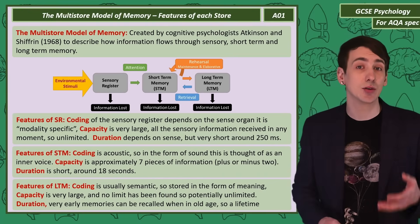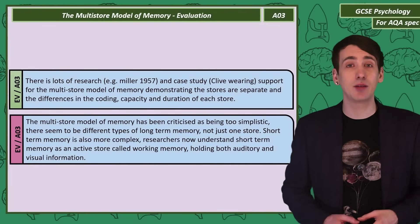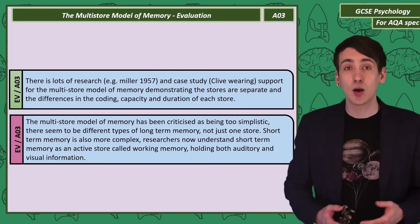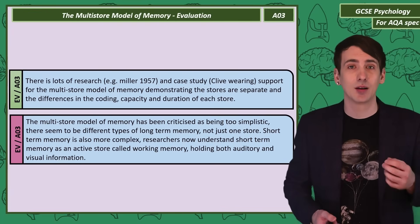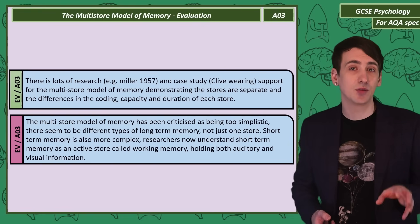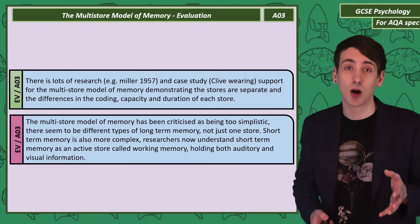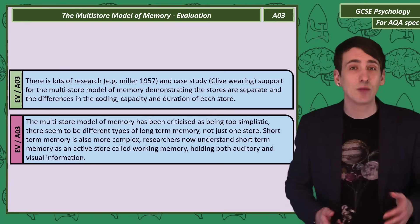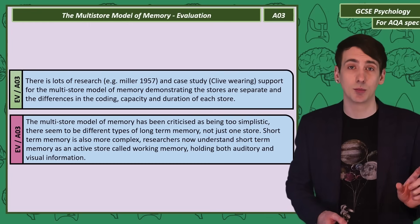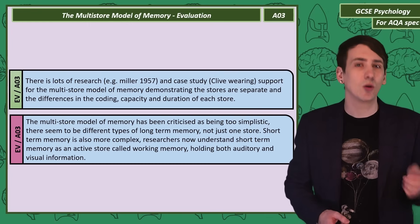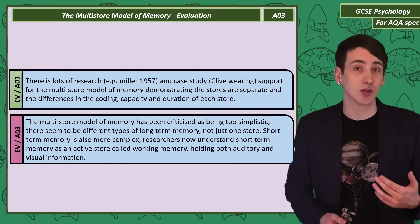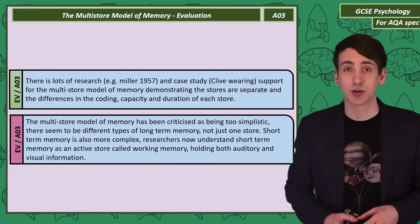Let's consider some evaluations of the multi-store model. There is a significant amount of evidence that the stores are separate — for example, the case study of Clive Wearing. He only has a short-term memory and no long-term memory, which suggests that the two stores are separate. Each store has been investigated for its features; the seven plus or minus two figure was from a researcher called Miller. However, we can criticize the multi-store model: it is too simplistic. Long-term memory isn't just one store — there are three types. Short-term memory also seems too simplistic, and researchers now use the working memory model to explain how we process both auditory and visual information in short-term memory.